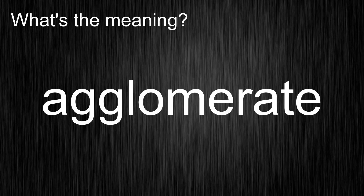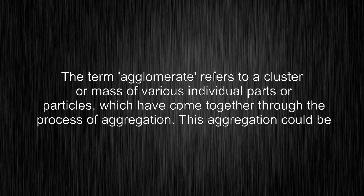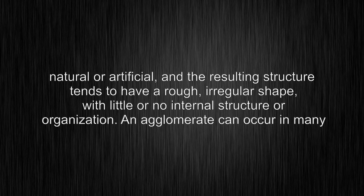What's the meaning of agglomerate? The term agglomerate refers to a cluster or mass of various individual parts or particles, which have come together through the process of aggregation. This aggregation could be natural or artificial, and the resulting structure tends to have a rough, irregular shape, with little or no internal structure or organization.